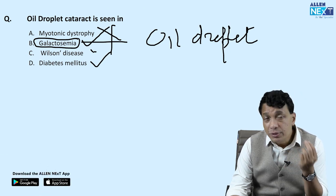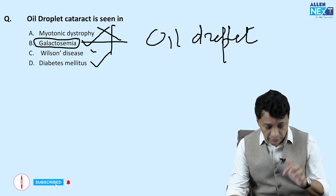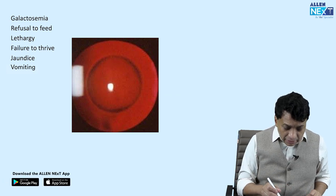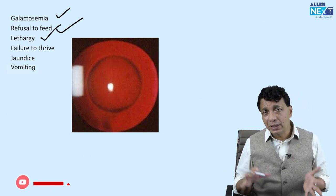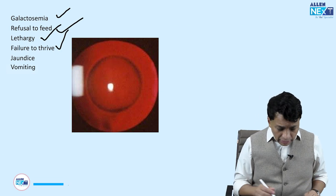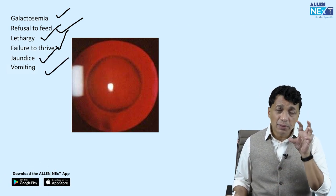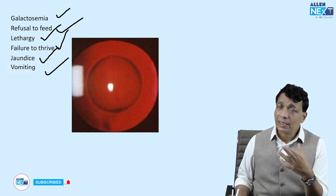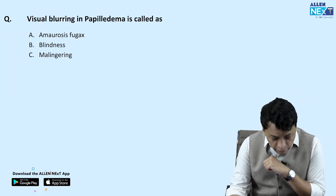Galactosemia features include refusal to feed, lethargy, failure to thrive, jaundice, and vomiting. So the question can be asked differently: a child presenting with jaundice, vomiting, and cataracts — the answer is oil droplet cataract from galactosemia. The oil droplet cataract can be visualized clearly on examination.